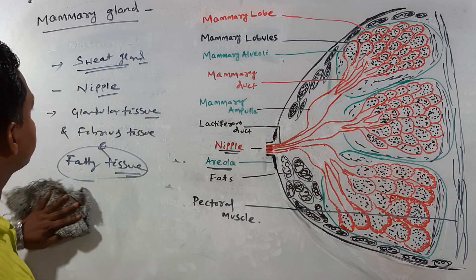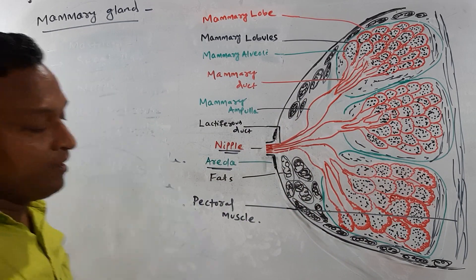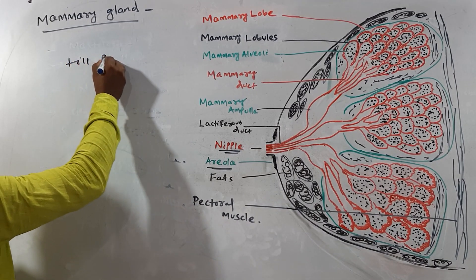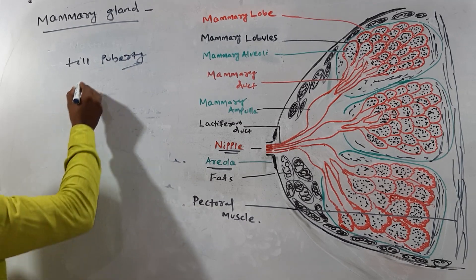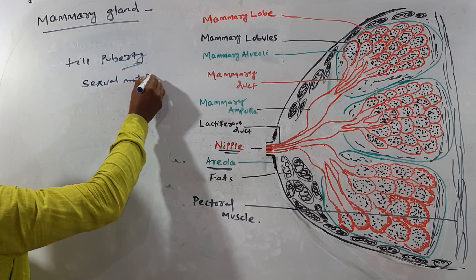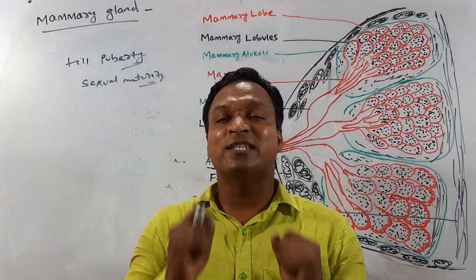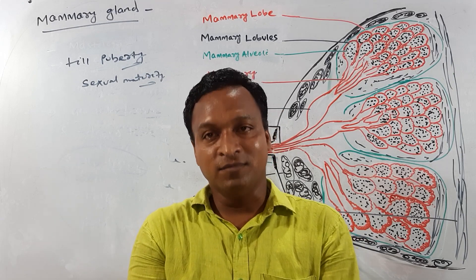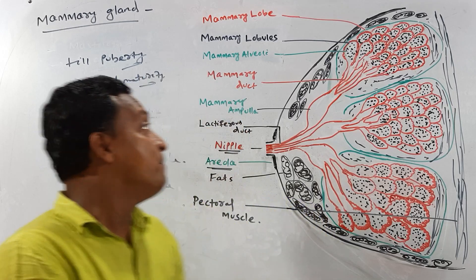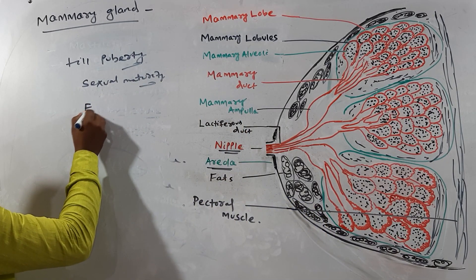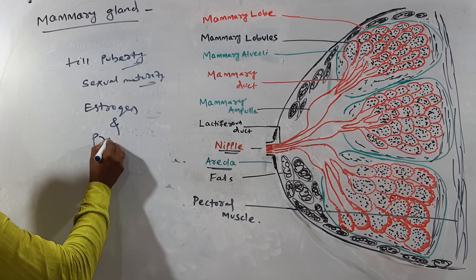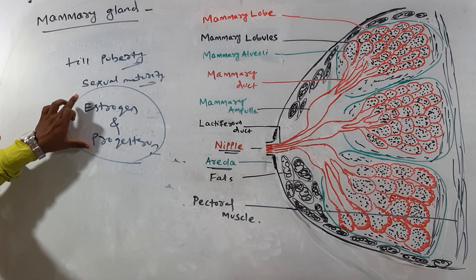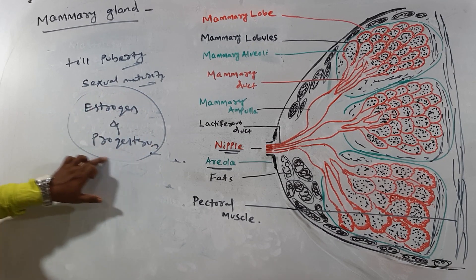In females, the mammary glands are small in size until puberty, or sexual maturity. When sexual maturity comes — when the menstruation cycle starts — the mammary glands grow in size due to the influence of two hormones: estrogen and progesterone.